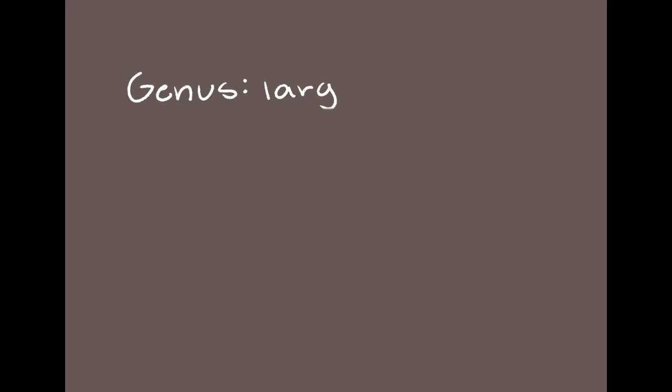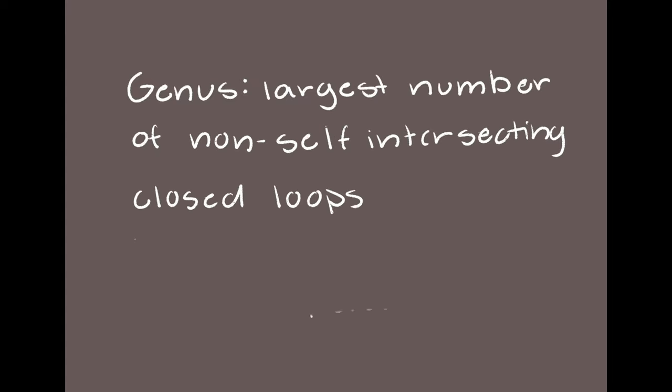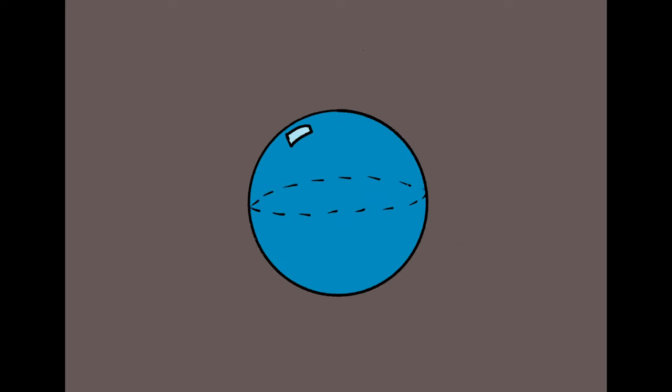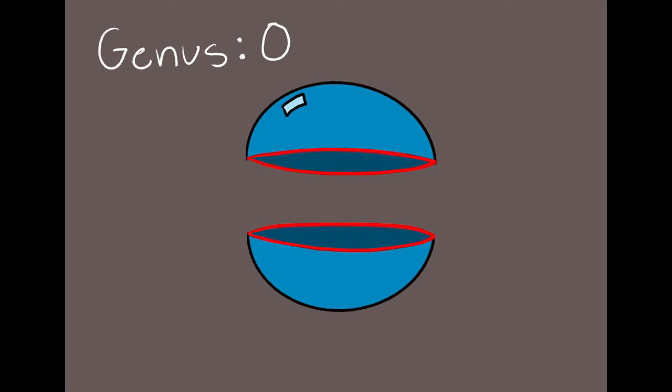You only do this when the genus remains the same. A genus? So not me. No. A genus is the largest number of non-self-intersecting closed loops that can be drawn on a surface without separating it. For a sphere, one closed loop separates into two pieces, for a genus of zero.